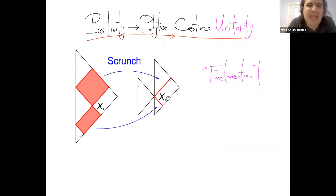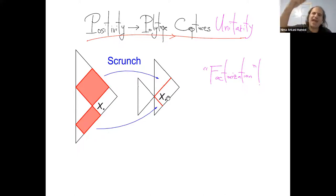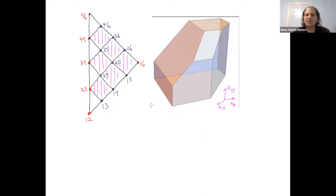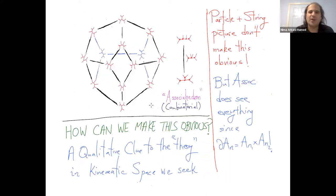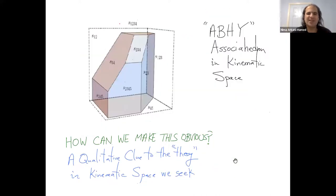By a two-line argument, this picture also explains unitarity: when you go to a boundary where some xij is set to zero, the geometry factorizes into the direct product of two smaller geometries associated with smaller triangles, exactly reflecting the factorization property of the polytope — that the facets are direct products of lower polytopes at smaller n.